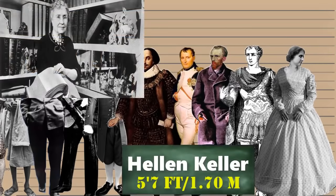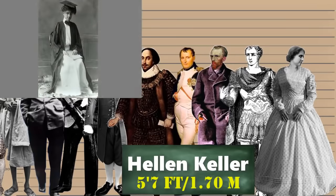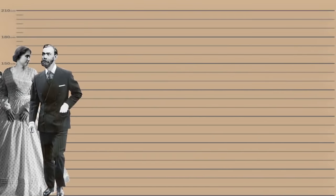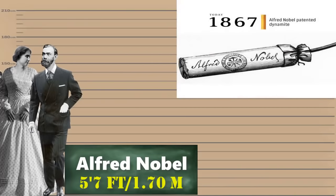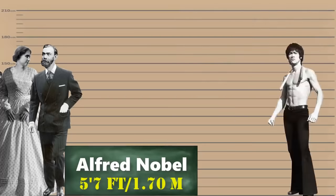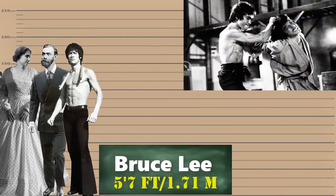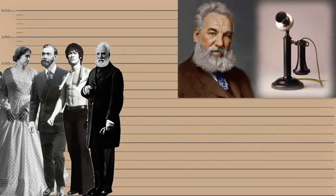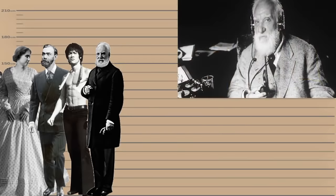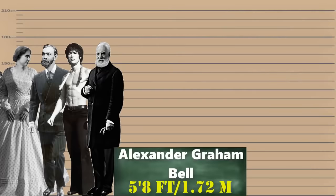Then we have the American author, political activist and lecturer who was the first deafblind person to earn a bachelor of arts degree — Helen Keller. Followed by the Swedish businessman, chemist, engineer and inventor famously known for inventing dynamite and other explosives — the Swedish-born Alfred Nobel. Next we have the Hong Kong-American actor, director, martial artist, instructor and philosopher — Bruce Lee. Then we have the Scottish-born scientist, inventor, engineer and innovator credited with inventing and patenting the first practical telephone and founder of the American Telephone and Telegraph Company — Alexander Graham Bell was 5 feet 8 inches.